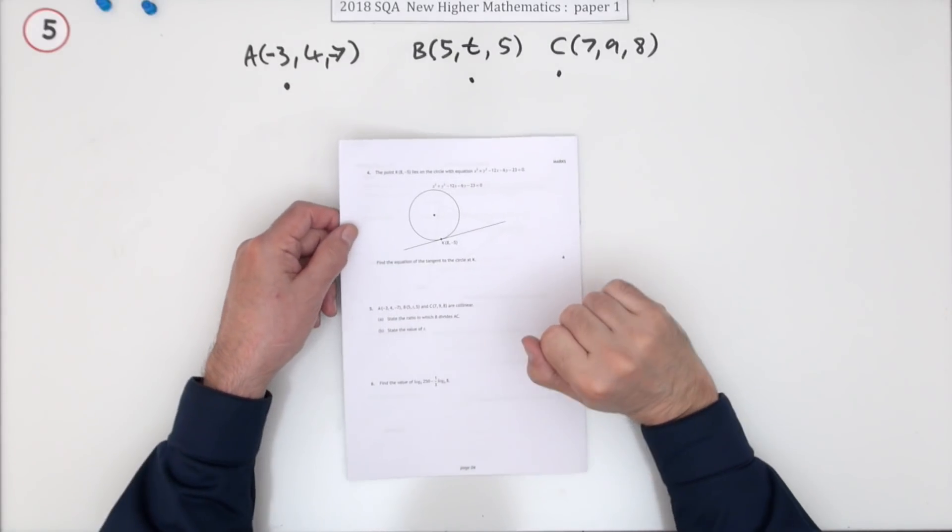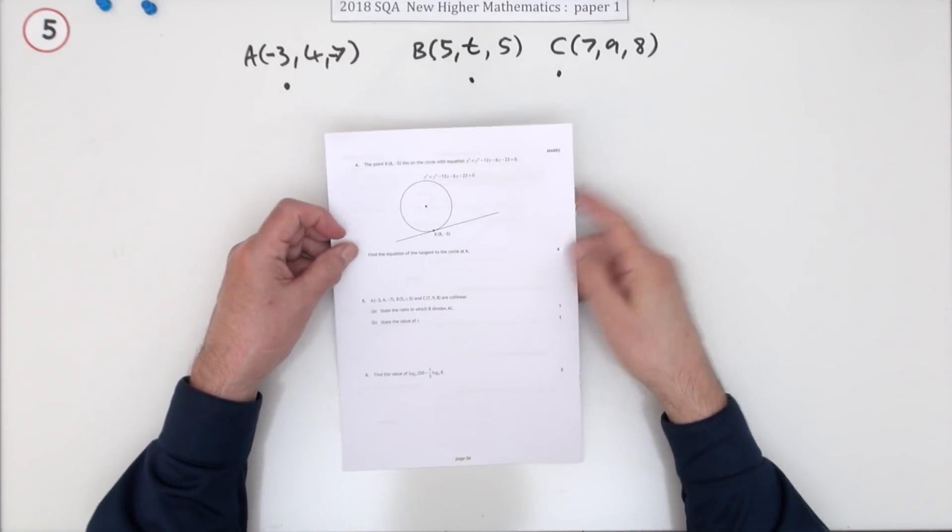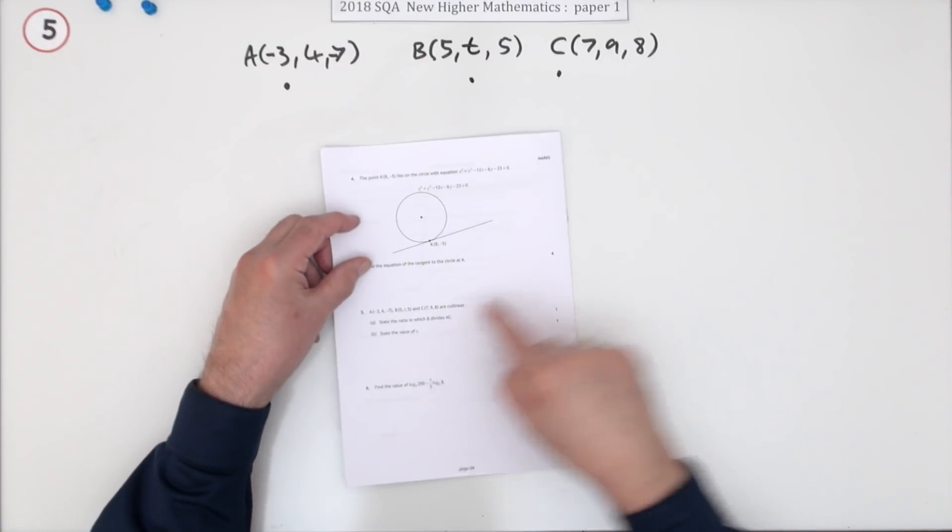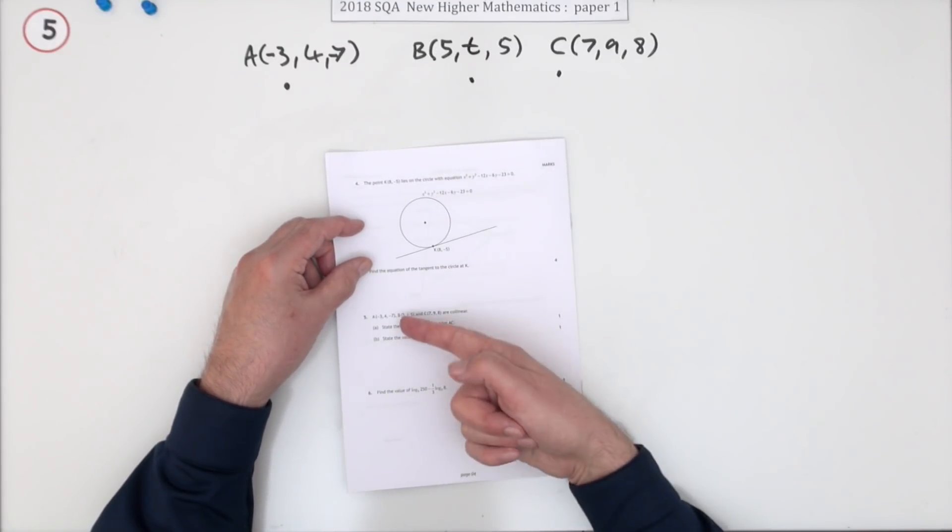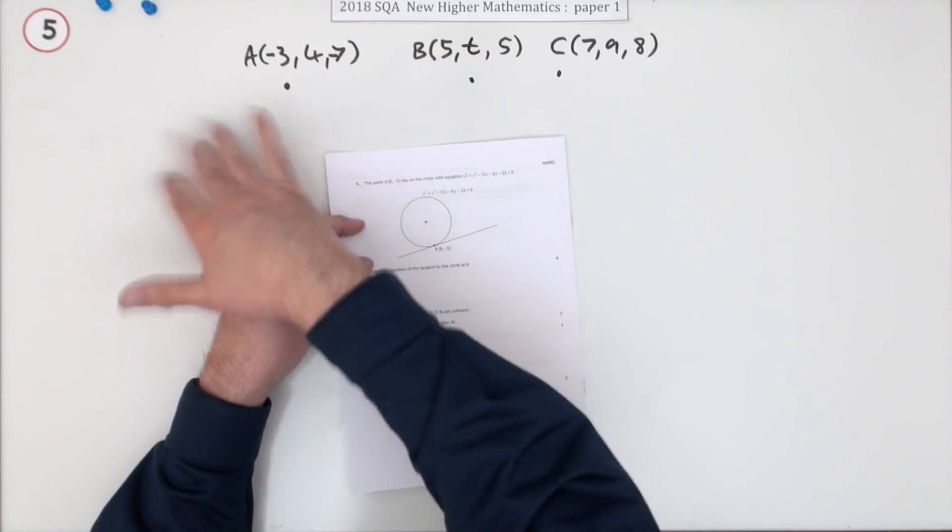Number five from the 2018 SQA Higher Maths paper one, just a two-mark question on collinear points and collinearity. It says state, so all you need to do is put down two answers for a mark each.